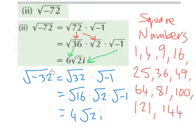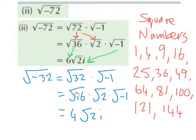In our next example, we're trying to work out the square root of minus 32. We break it down to be the square root of positive 32 multiplied by the square root of minus 1. The square root of 32 we break down as the square root of 16 multiplied by the square root of 2, because 16 times 2 is 32, and 16 is a square number — 4 squared is 16.